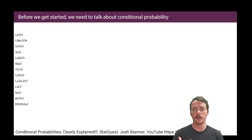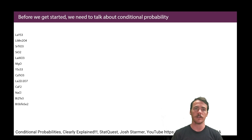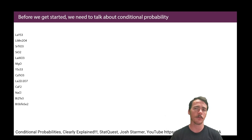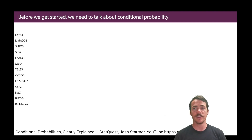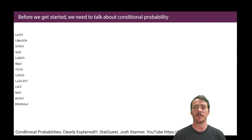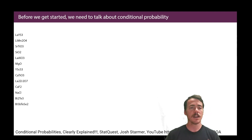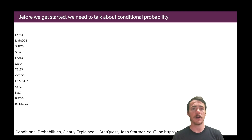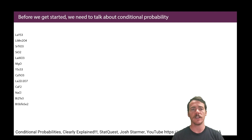Before we get into it, most people aren't familiar with conditional probability, so we should probably start there, because it turns out to be an important part of describing Bayes' theorem. I'm adapting this from a great video by Josh Starmer over at StatQuest on YouTube — a great channel — and I'm going to adapt it for materials science. Here on the left we see a bunch of different compounds: lanthanum, yttrium sulfide, lithium, manganese oxide, all the way down. There are 13 of them.